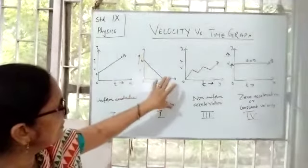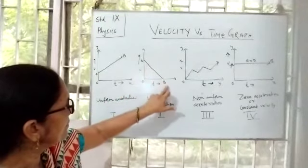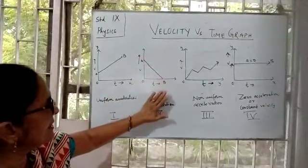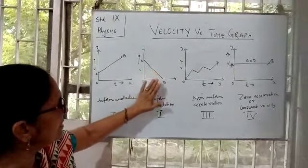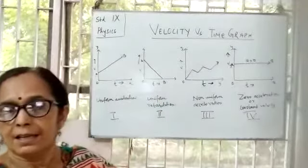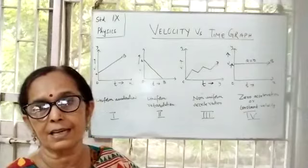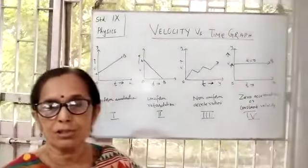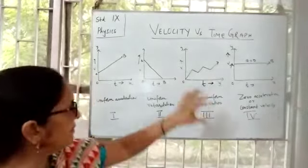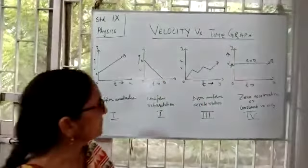In the second graph, the graph line is moving towards the x-axis, and since it is a straight line, it indicates that the velocity of the moving object is decreasing constantly with time. When velocity decreases constantly with time, that is also uniform acceleration but in the negative direction — we name it uniform retardation or deceleration.